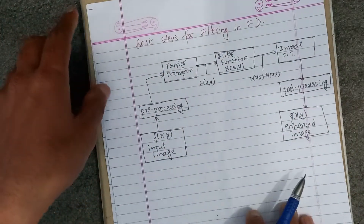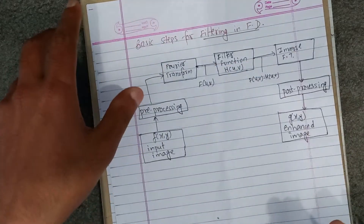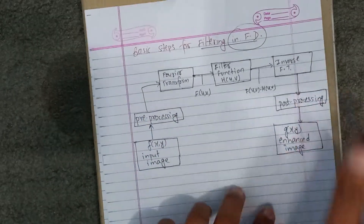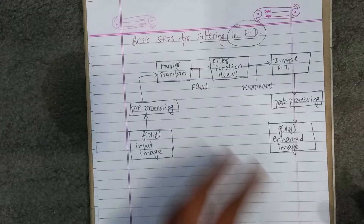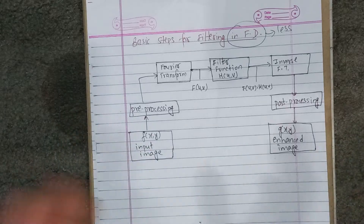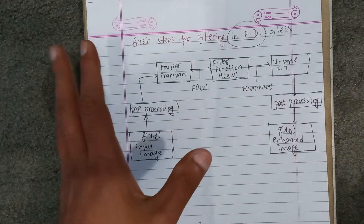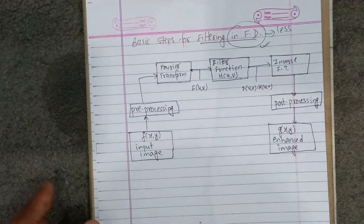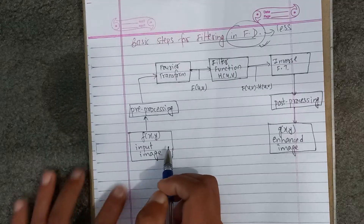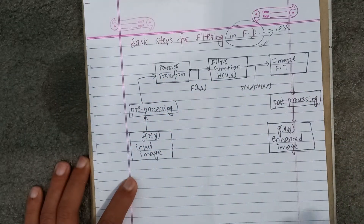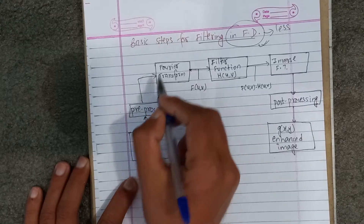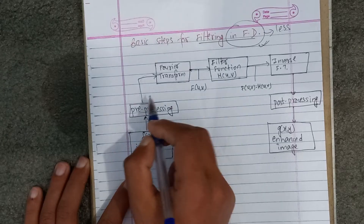First, we are going to be learning the frequency domain. We are going to look at less computational approaches. We are going to work on a special image, doing pre-processing. We are going to be doing a Fourier transform. What is the Fourier transform? We are going to be doing it in the frequency domain.